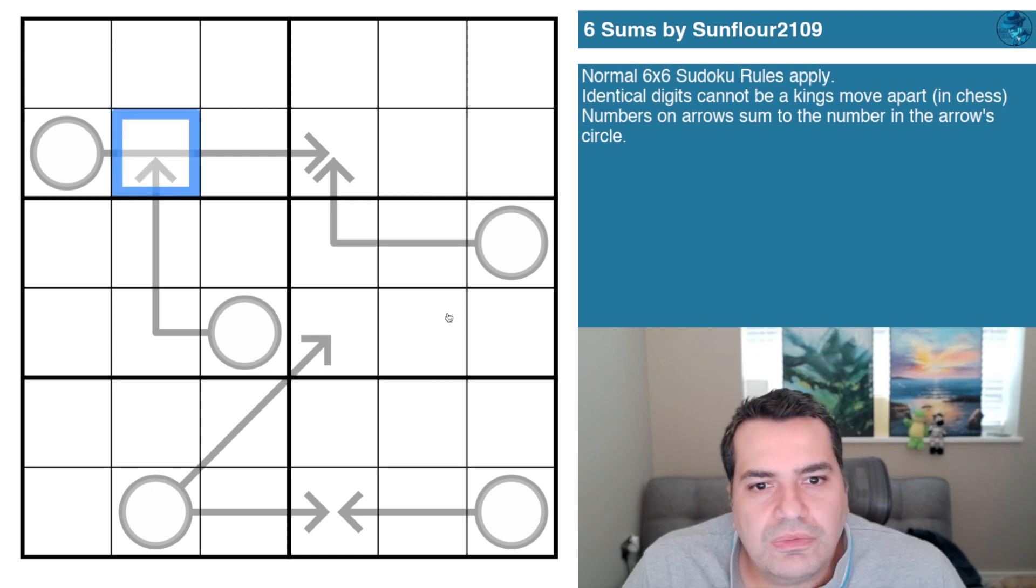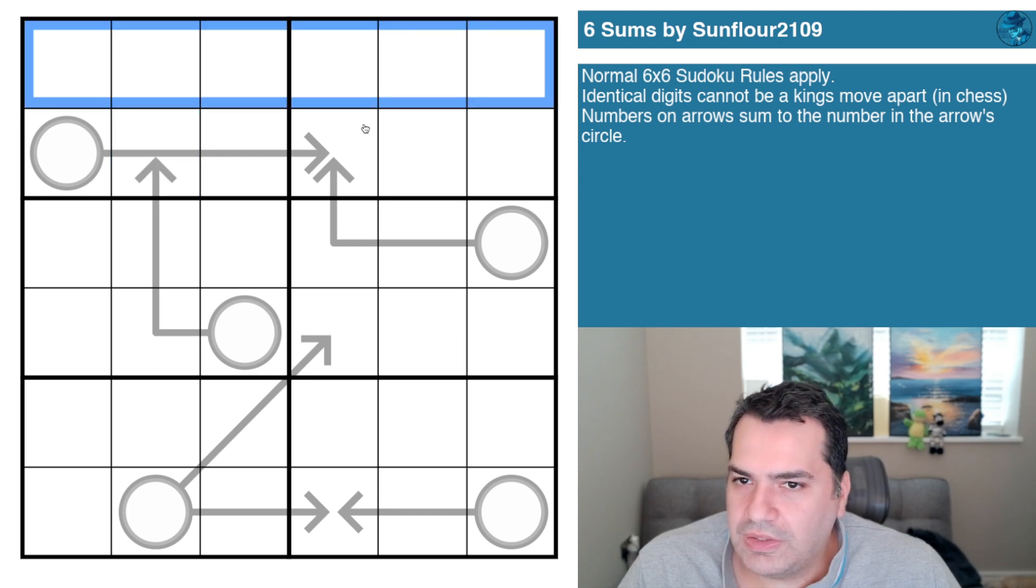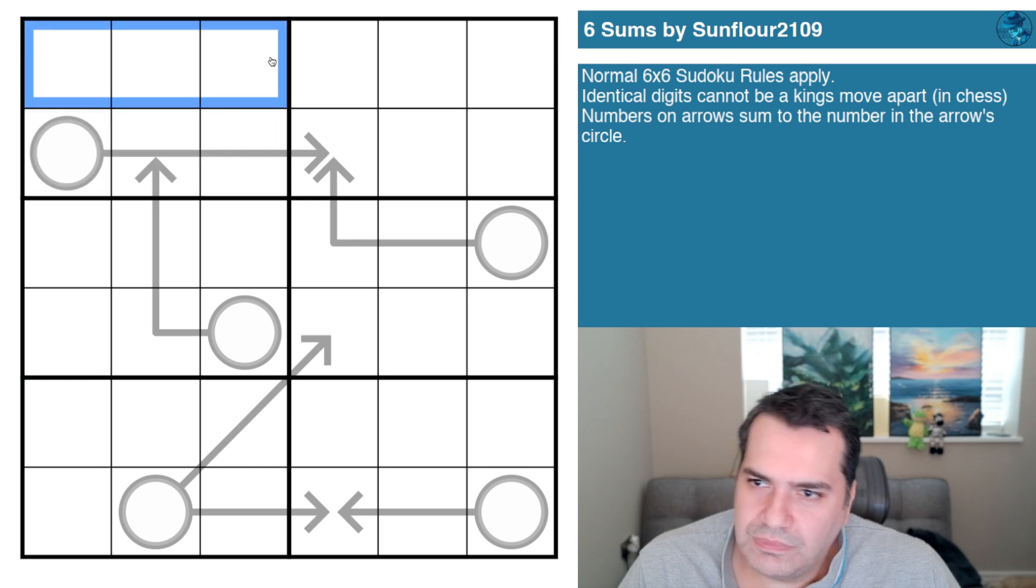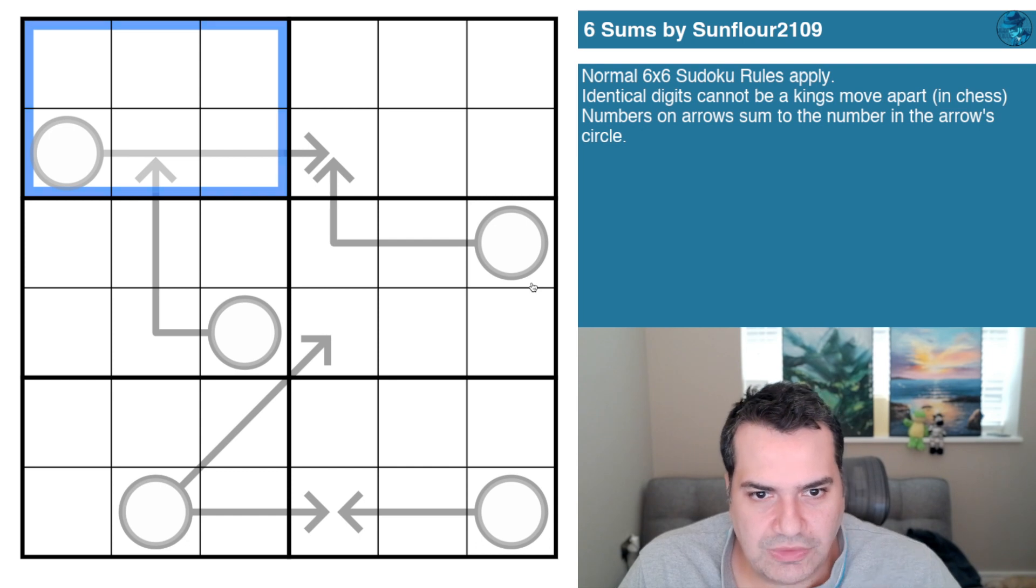Normal six by six Sudoku rules, so that's relatively easy. That means the digits one to six in every row, every column, and every two by three box or three by two box I just kind of selected there.